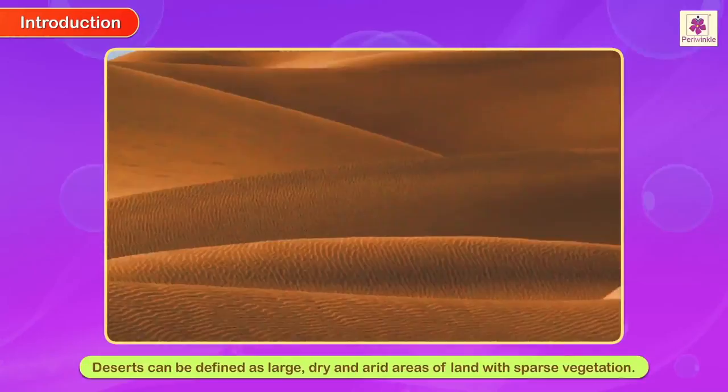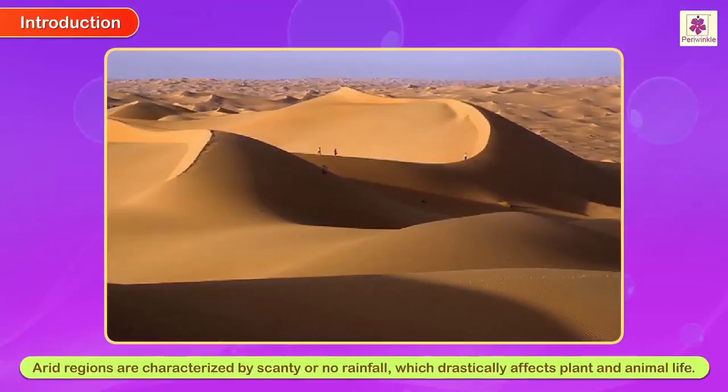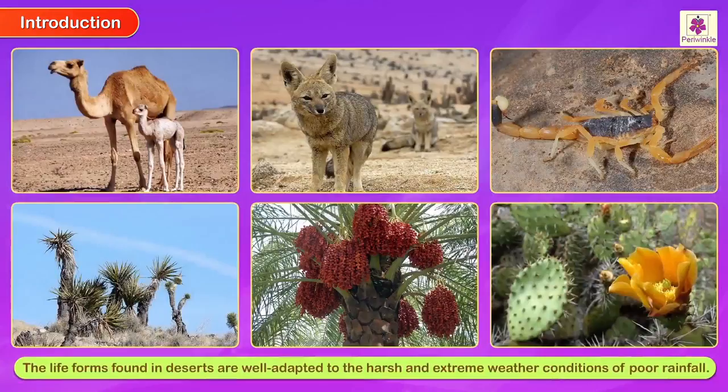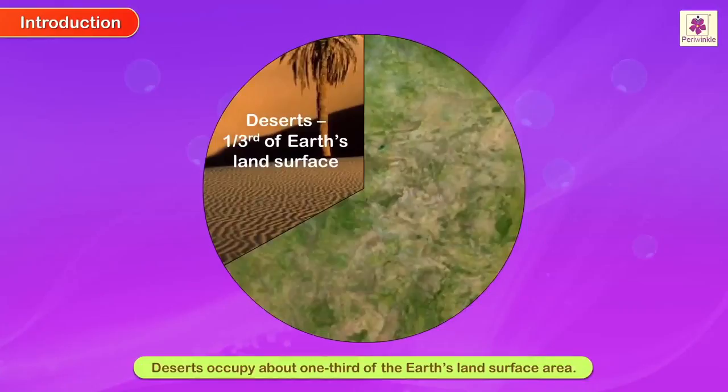Deserts can be defined as large, dry, and arid areas of land with sparse vegetation. Arid regions are characterized by scanty or no rainfall, which drastically affects plant and animal life. The life forms found here are well adapted to the harsh and extreme weather conditions of poor or no rainfall. Deserts occupy about one-third of the Earth's land surface area.